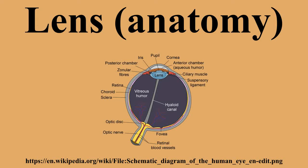As the placode continues to deepen, the opening to the surface ectoderm constricts and the lens cells form a structure known as the lens vesicle. By the 10 mm stage, the lens vesicle has completely separated from the surface ectoderm. After the 10 mm stage, signals from the developing neural retina induce the cells closest to the posterior end of the lens vesicle to elongate toward the anterior end. These signals also induce the synthesis of crystallins. These elongating cells eventually fill in the lumen of the vesicle to form the primary fibers, which become the embryonic nucleus in the mature lens. The cells of the anterior portion of the lens vesicle give rise to the lens epithelium.